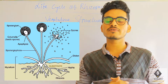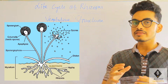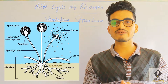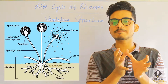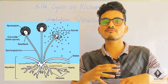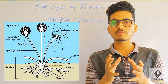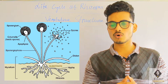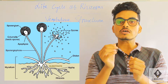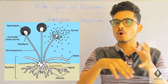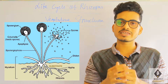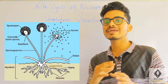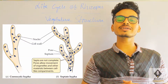Now let us talk about the vegetative structure of Rhizopus. The vegetative structure is called hyphae. Hyphae are profusely branched structures. A number of hyphae branches all together form what we call mycelium.